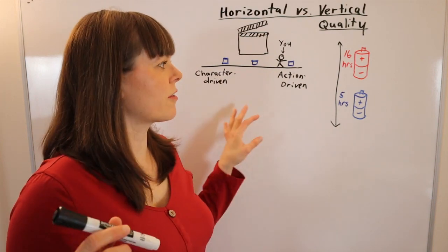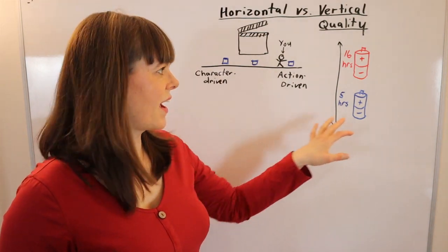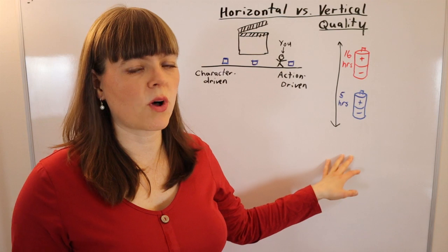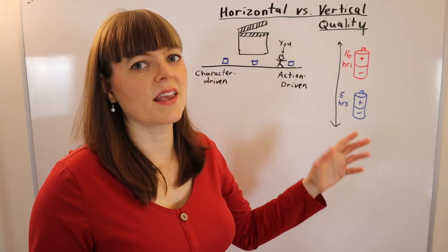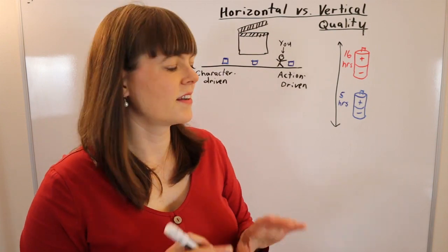Now, how do economists model these two things? As you might imagine, modeling vertical quality is a little bit easier. It's simply that you stick that quality into the demand function like this.